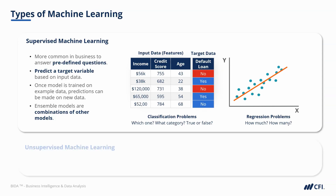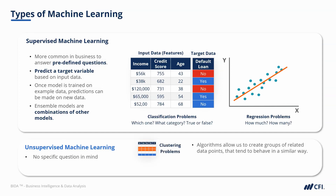In unsupervised machine learning, we don't have a specific question in mind. We simply have a collection of data that we think is somehow related. Unsupervised learning algorithms often solve clustering problems, which means they create groups of related data points that tend to behave in a similar way.